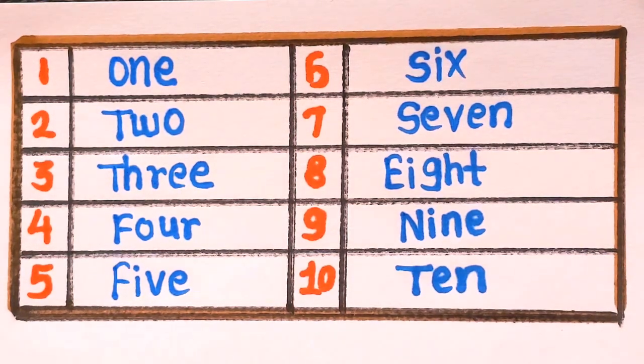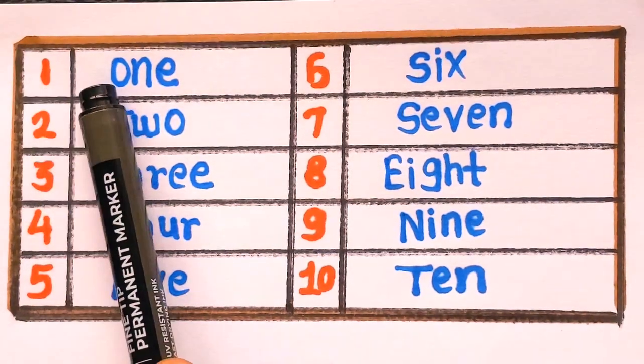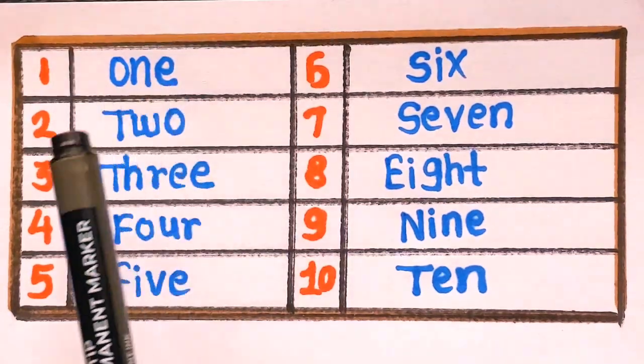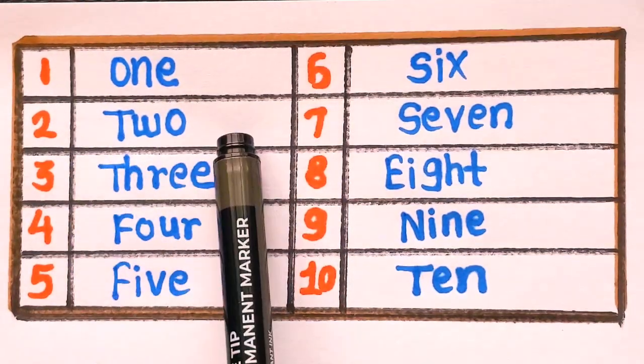Now, let's revise with me. Number 1. O-N-E. One. Number 2. T-W-O. Two.